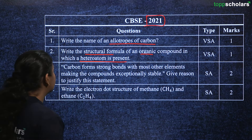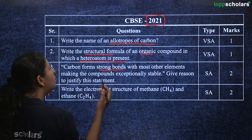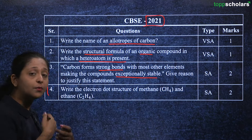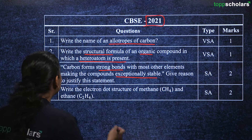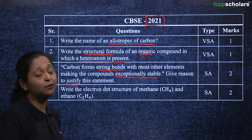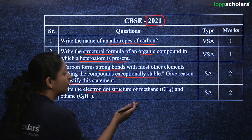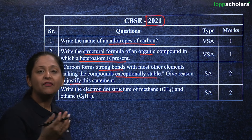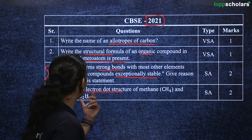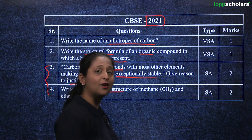For the two mark questions in 2021: Carbon forms strong bonds with most other elements making compounds exceptionally stable — you have to justify this, noting that carbon shares electron pairs forming covalent bonds. The second question asks you to write the electron dot structure of methane and ethane. Whenever an electron dot structure is asked, it becomes easy — you just draw the structure based on the chemical formula given.